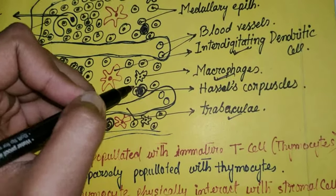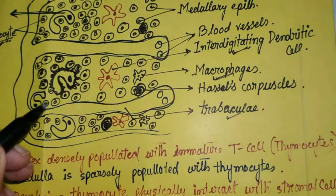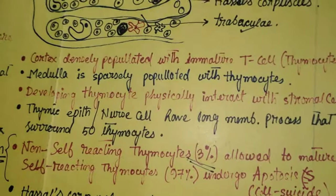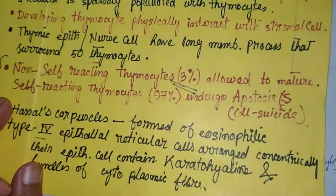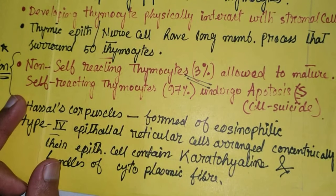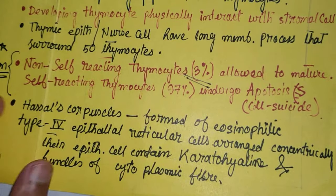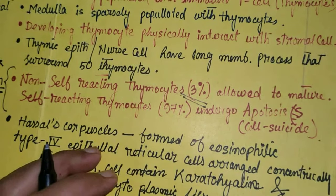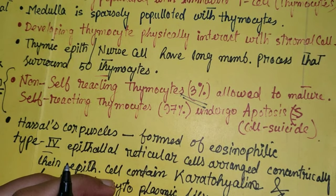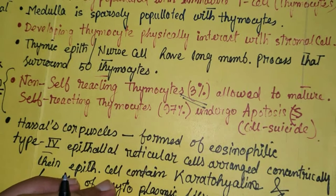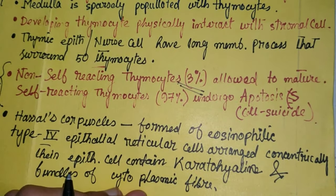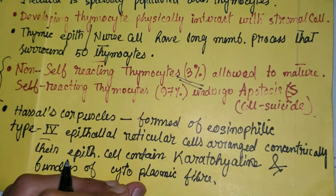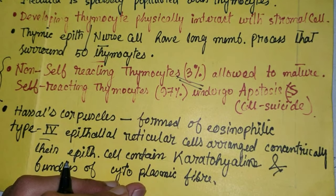The next important structure inside the thymus gland is Hassall's corpuscle. These are Hassall's corpuscles found inside the thymus gland, specifically in the medulla portion. Hassall's corpuscle is formed of eosinophilic type 4 epithelial reticular cells arranged concentrically. The epithelial cells contain keratohyaline and bundles of cytoplasmic fibers.